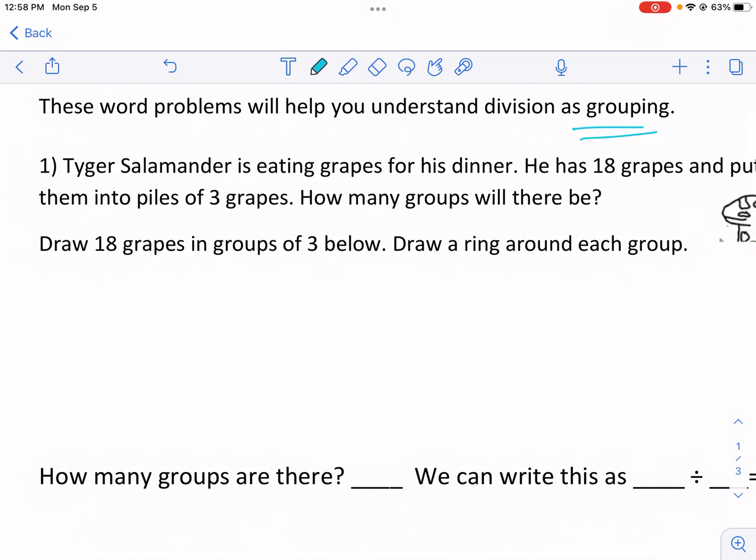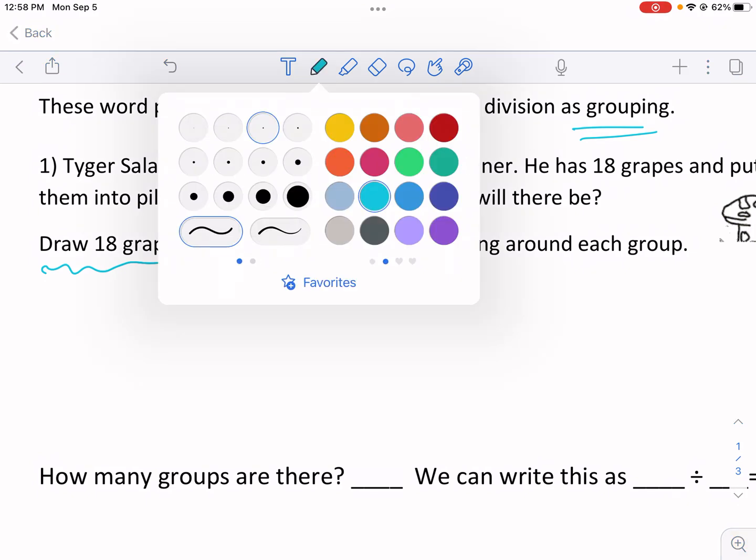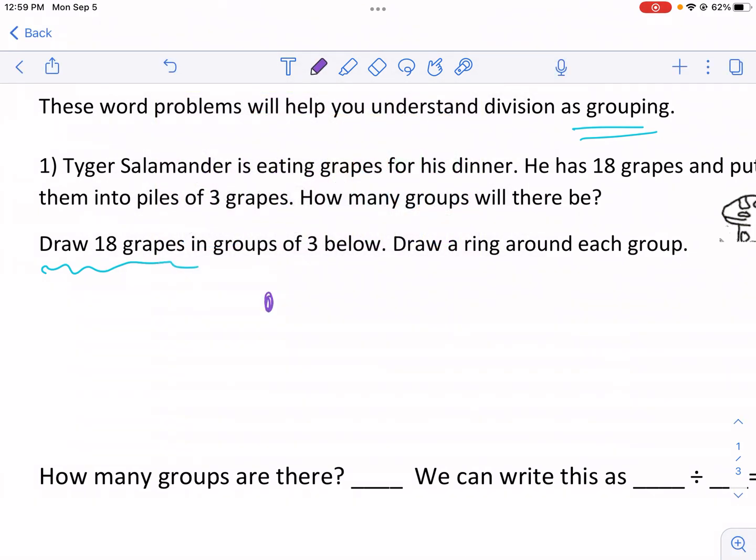So the first thing we kind of got to do here is it's going to say draw 18 grapes in groups of three. So let's just start. I need to choose a better color for my grapes, and I have one grape there, and then what I'm going to do is I'm just going to keep putting them in groups of three. That's one group of three. So I'm going to see how many of these groups of three will there be. How many groups? That's what it's asking.